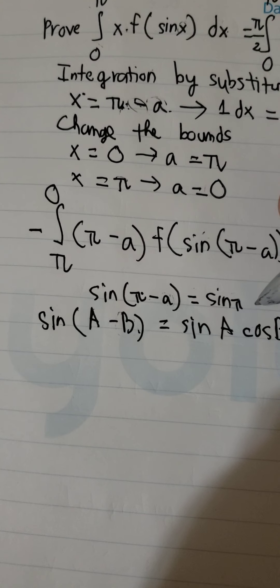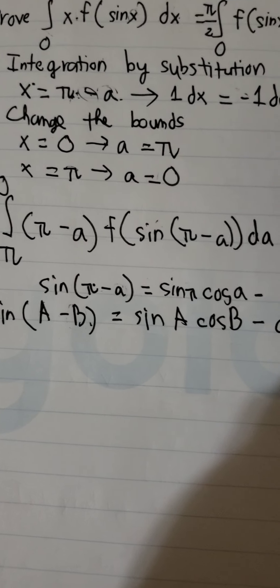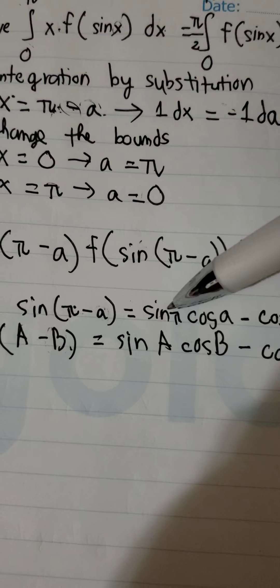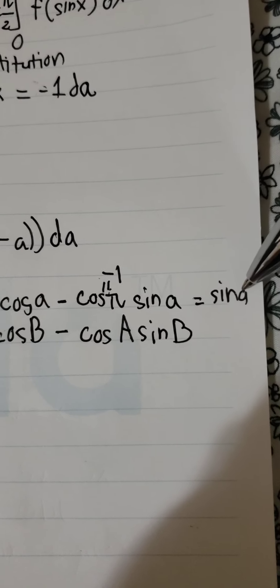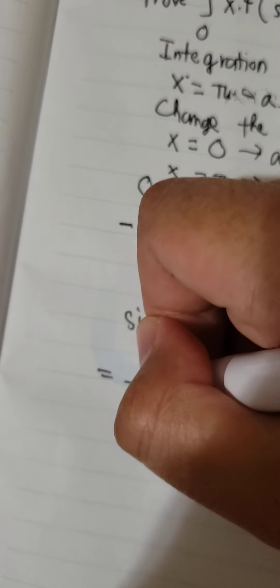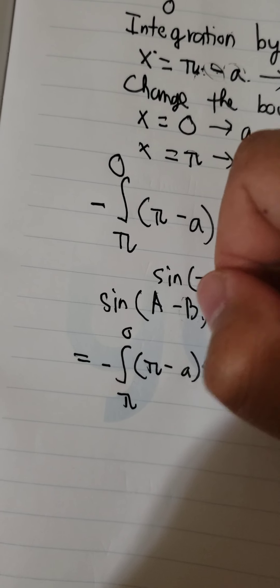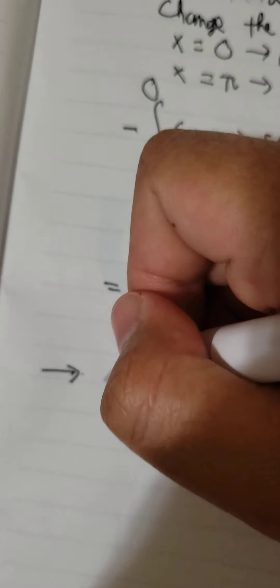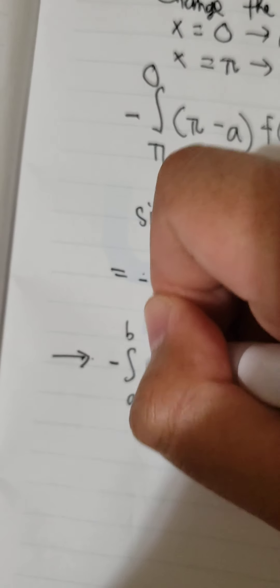Using the formula, we know that sin(B minus a) equals sin(A). Negative times negative gives us positive, so sin(B minus a) equals sin(A). We now have sin(A) in the integral here.